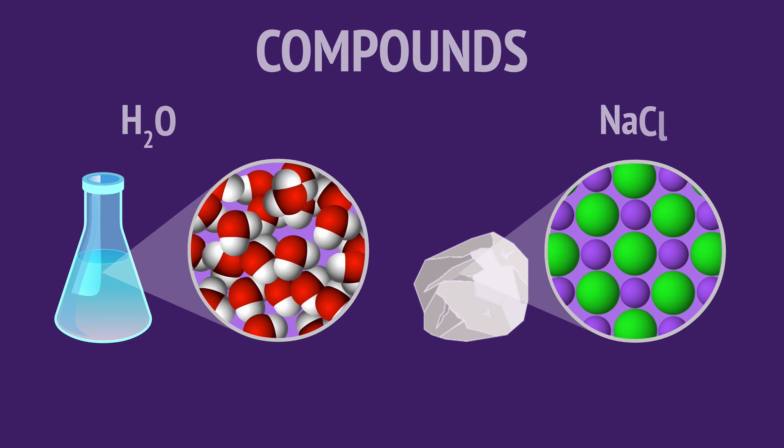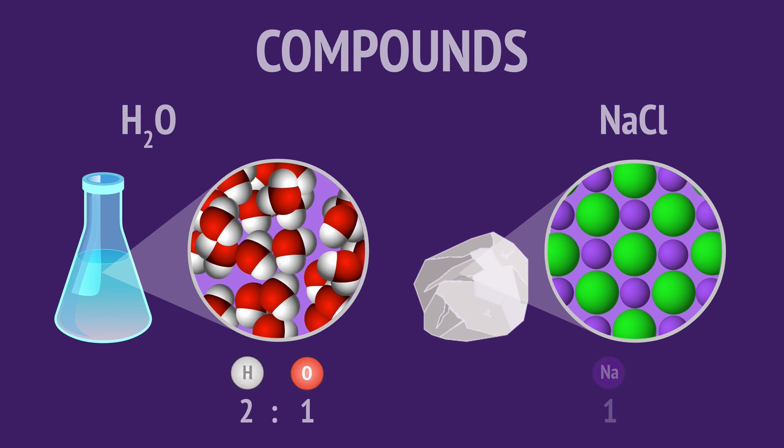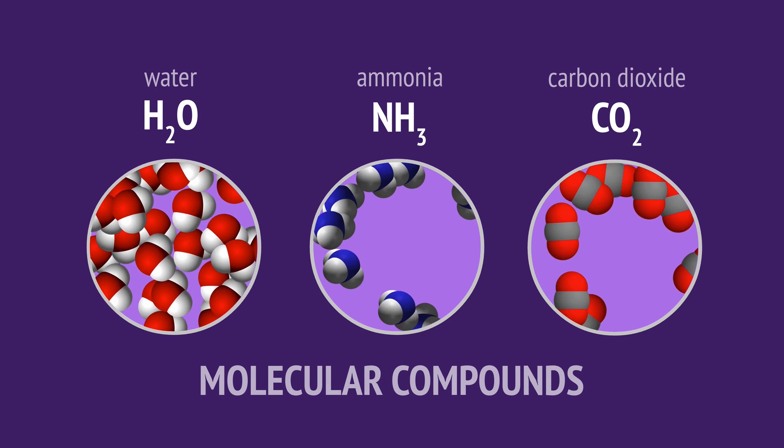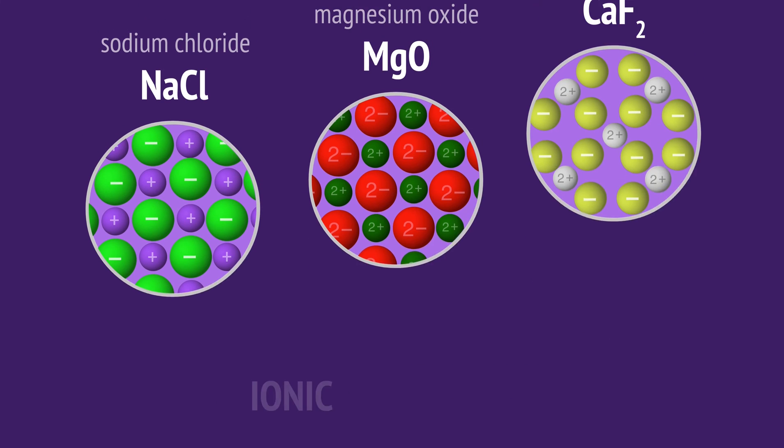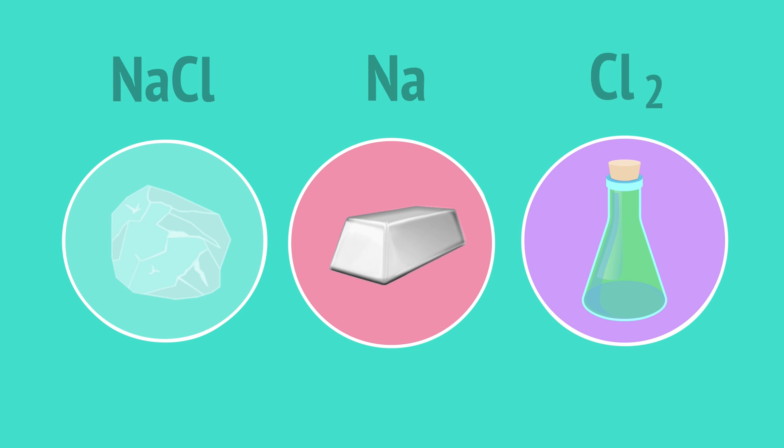So, we've seen that compounds are made from two or more elements that have chemically combined in a fixed ratio. And that these compounds can be either molecular or ionic. We've also seen that the properties of a compound are different to the properties of the elements it contains. And that only a chemical reaction can separate the elements from a compound.